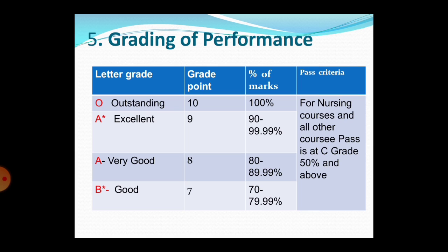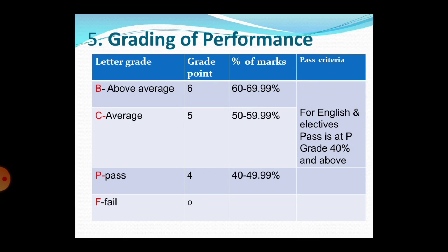For nursing courses and other courses, the pass grade is C — that is 50% and above. B means above average, with a percentage of 60 to 69.99% and a grade point of 6. C means average, with a grade point of 5 and a percentage of 50 to 59.99%. Fail means F, with a grade point of 0. For English and other elective subjects, pass is at P grade — 40% and above.